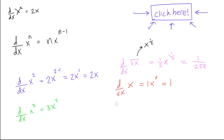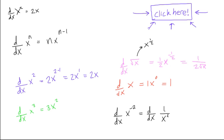Let's do one last power rule example. What if we had d/dx of x to the minus 2? This is the same thing as d/dx of 1 over x squared — that negative exponent just means we're putting it on the bottom, 1 over x squared. It's easier to work like this. So if you ever get a problem that says the derivative of 1 over x squared, just make it x to the minus 2. We'll bring the minus 2 out in front: minus 2 times x to the power of minus 2 minus 1, which is minus 3. This is also equal to negative 2 over x cubed.